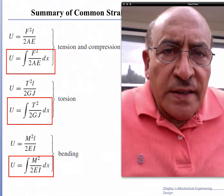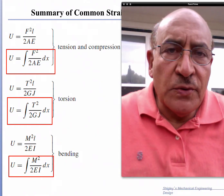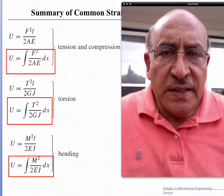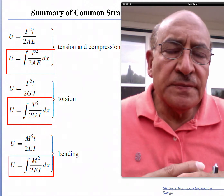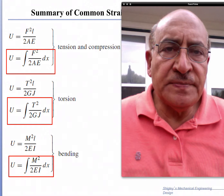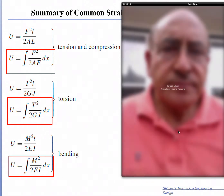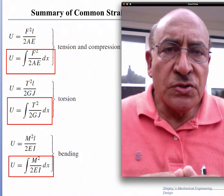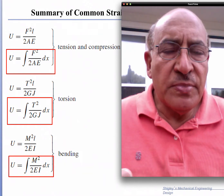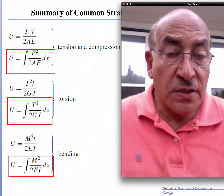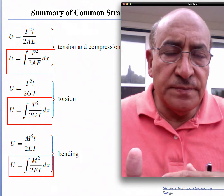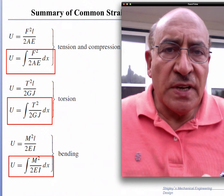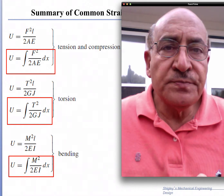Welcome back. In this session we're going to discuss one of the last methods we will learn about for calculating deflections. It's a very powerful method that can allow us to calculate deflection in either statically determinate or statically indeterminate beams, and also for any shape — for example, curved sections and curved beams. I'm going to review the idea behind it, which is the basis for Castigliano's theorem, and then give a few examples.